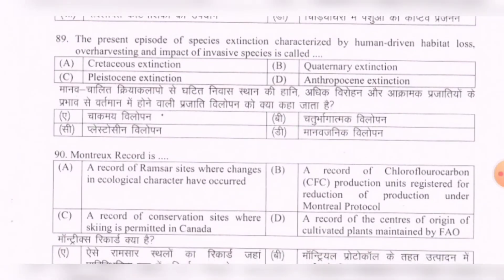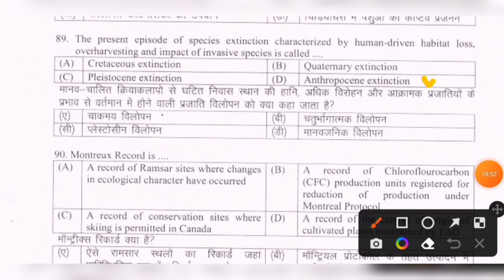Next question: The present episode of species extinction characterized by human-driven habitat loss, over-harvesting, and impact of invasive species is called — options are: Cretaceous extinction, Quaternary extinction, Pleistocene extinction, Anthropocene extinction. The correct option is D — Anthropocene extinction.